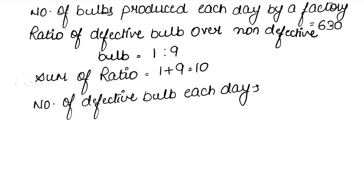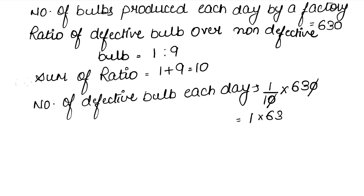The number of defective bulbs per day is 1 out of a total of 10. And the factory makes 630 bulbs each day. So we calculate 1 over 10 multiplied by 630. The zeros cancel, giving us 1 into 63, which is 63 bulbs. So 63 defective bulbs are produced each day. Answer.